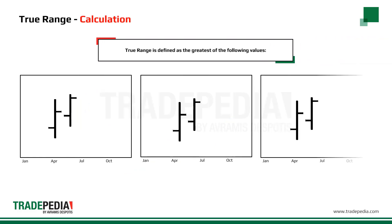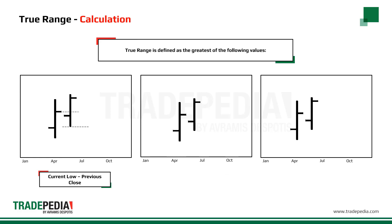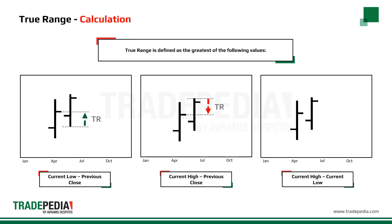True range is defined as the greatest of the following values: current low minus previous close, current high minus previous close, or current high minus current low. The average true range is a moving average of the true range for a specific time period, usually 14 periods.